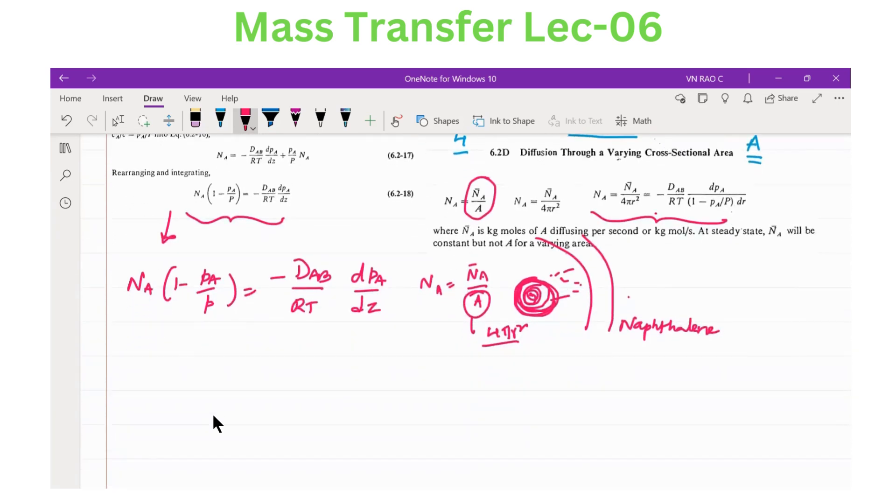So what do I do? Now, it is no more Z, it is R. Let me write again. Minus NA by A into 1 minus PA by P equals minus DAB by RT DPA by DR.